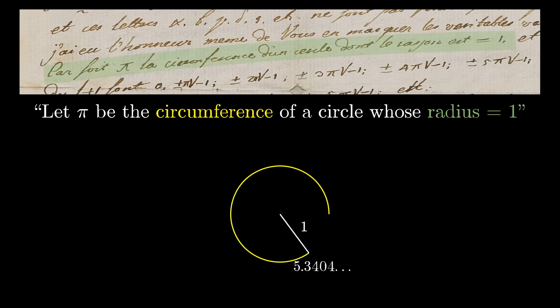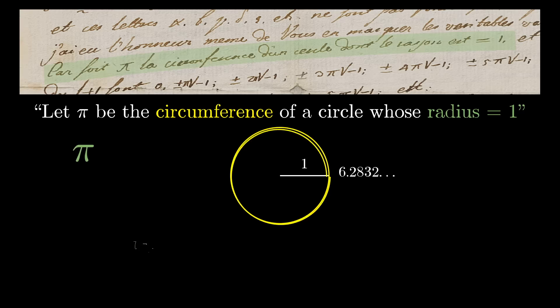And in looking through some of those, it might surprise you to see Euler write, let pi be the circumference of a circle whose radius is 1. That is the 6.28 constant that we would now call tau, and it's likely he was using the Greek letter pi as a p for perimeter.